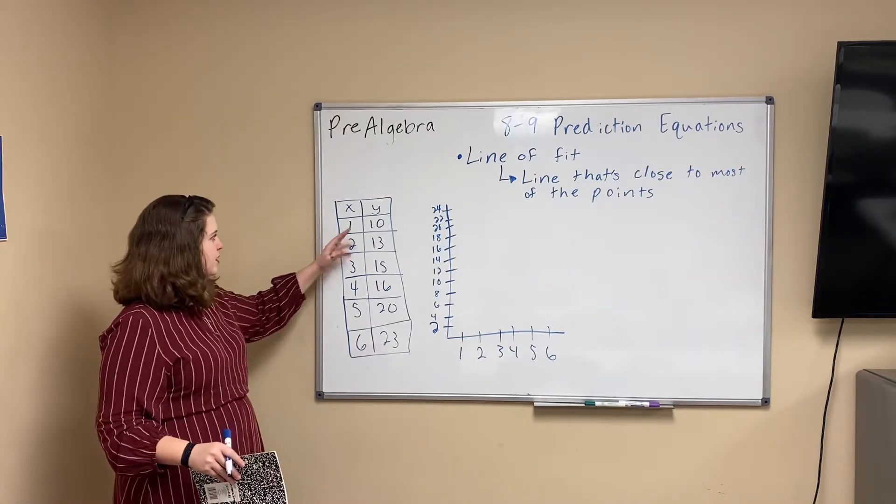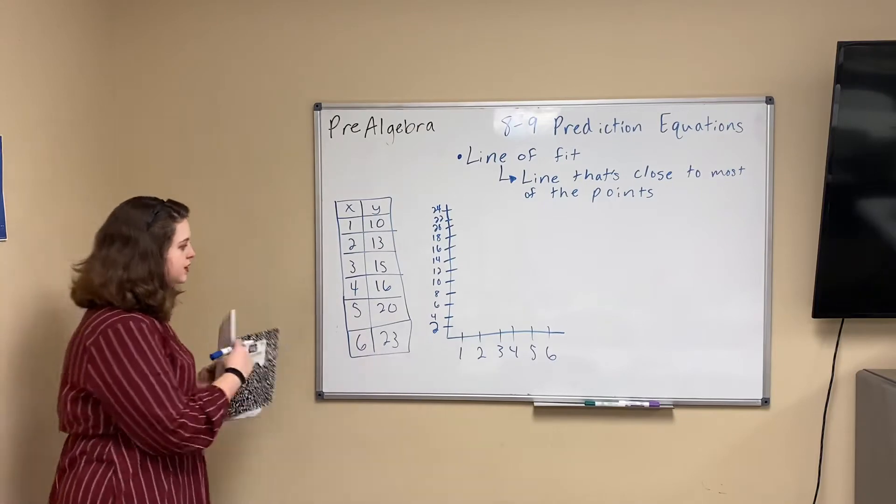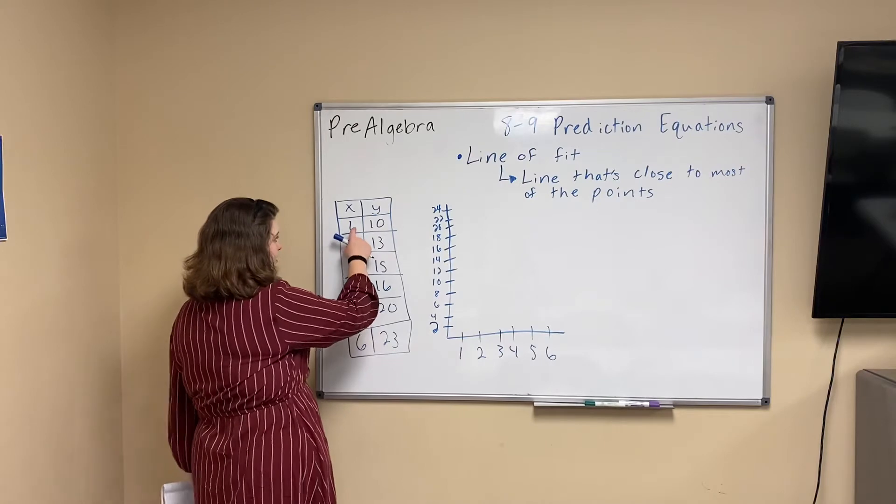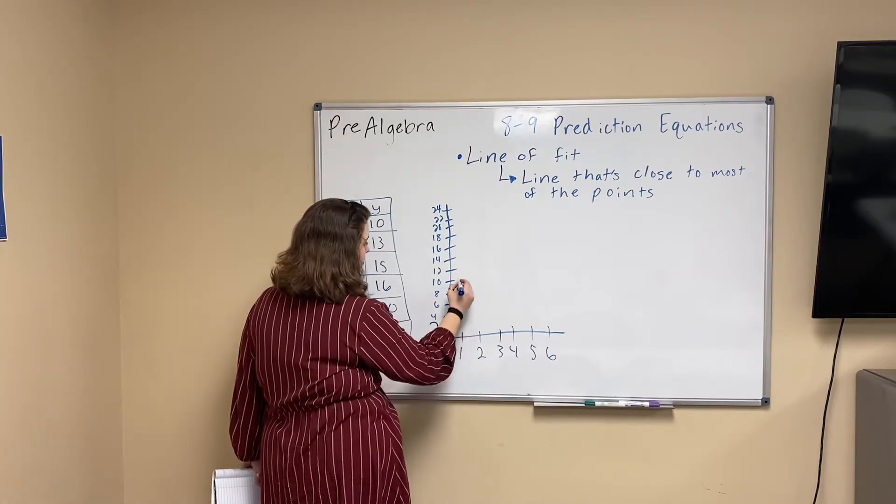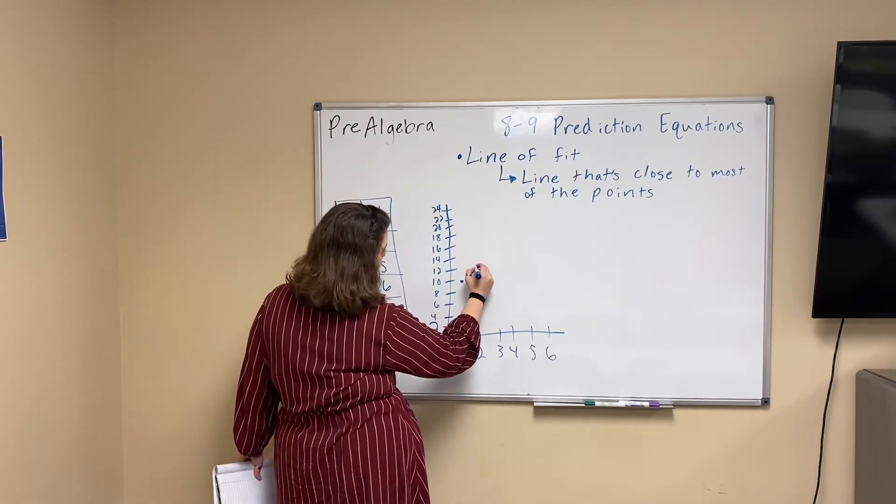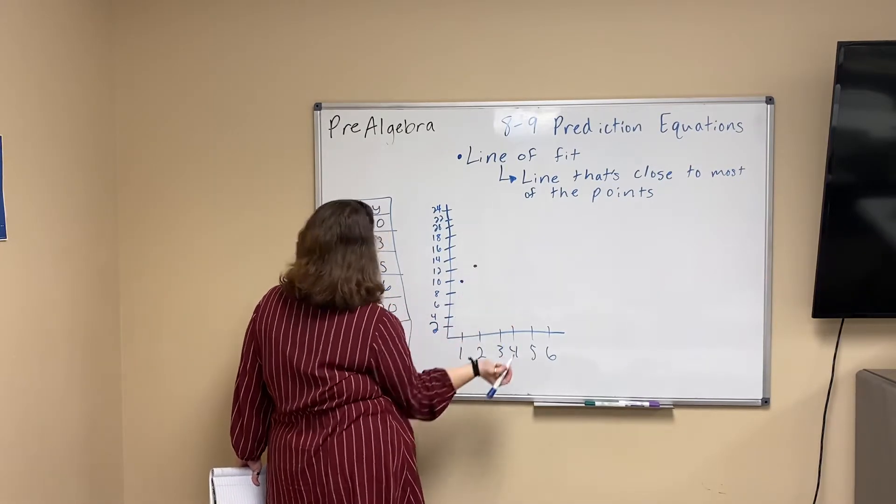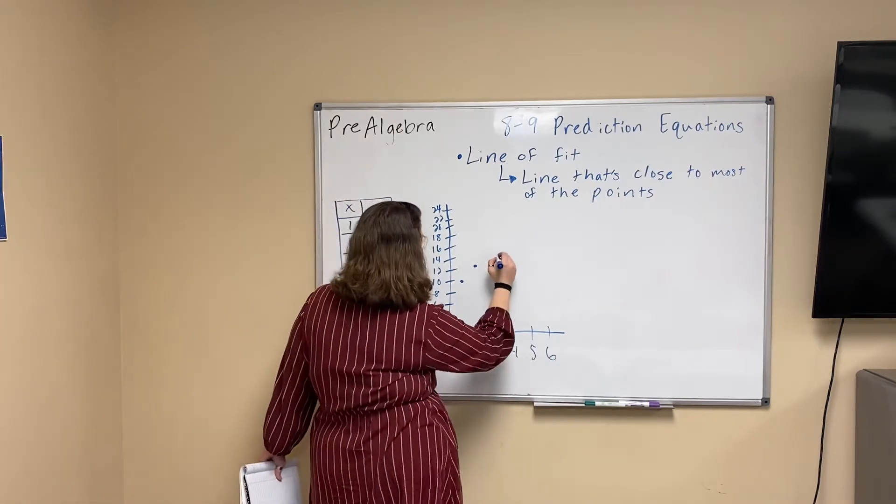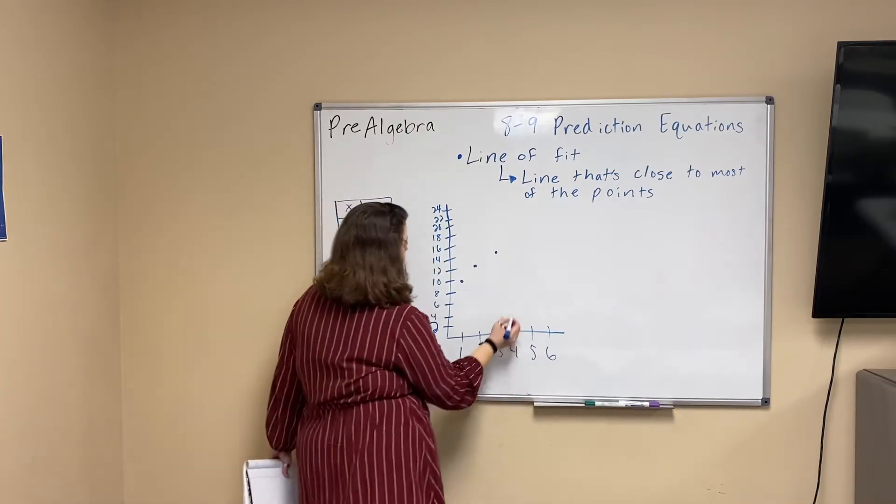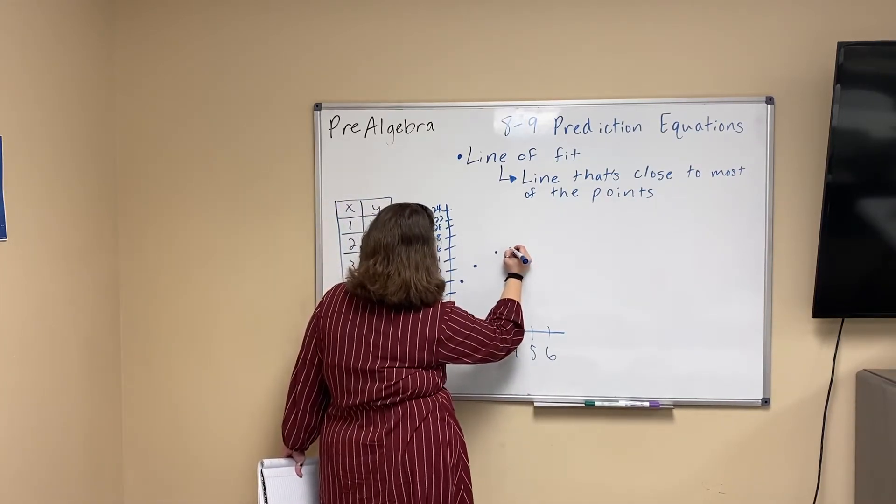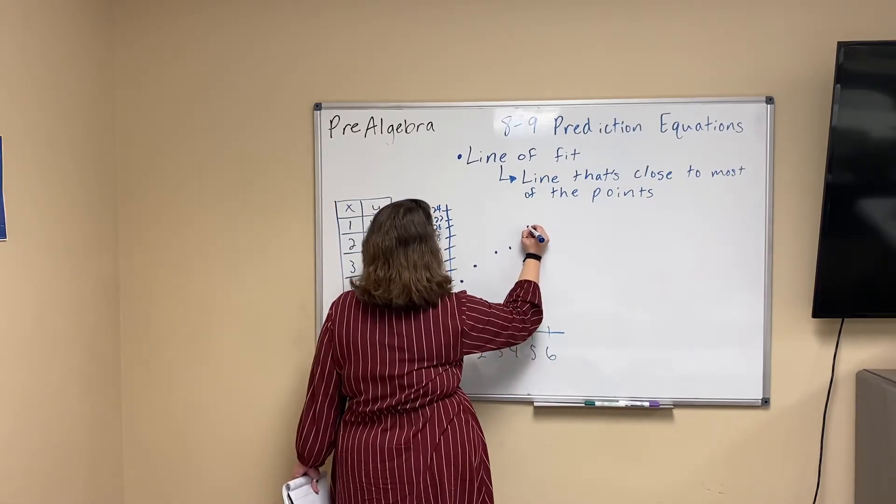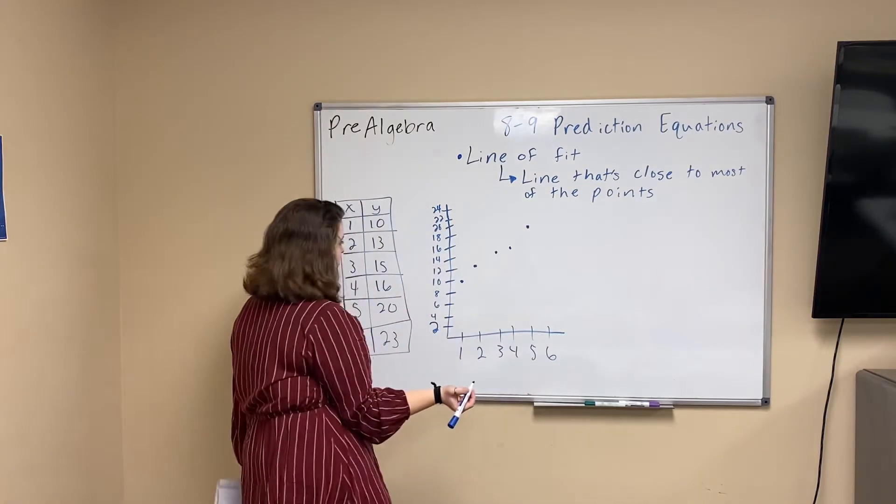So each year, something else happens, and it's growing progressively. You're going to plot these points on your graph. So we're going to go, when x is one, y is ten. So we're going to start at one and go to ten. Two is thirteen. So we're going to go like halfway here. Three is fifteen. Four is sixteen, so only a little bit higher than three. Five is all the way up to twenty. And six is twenty-three.